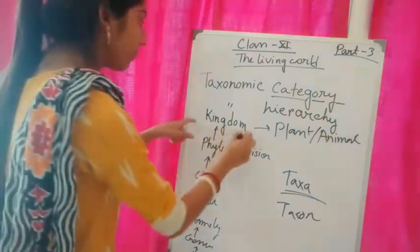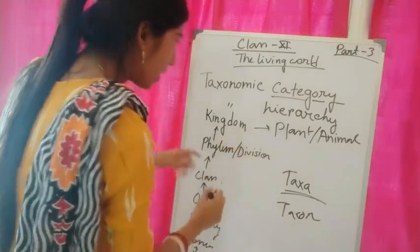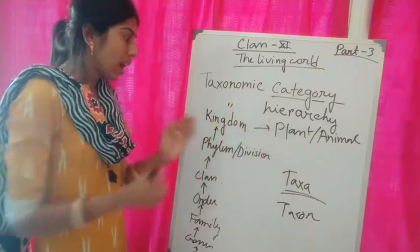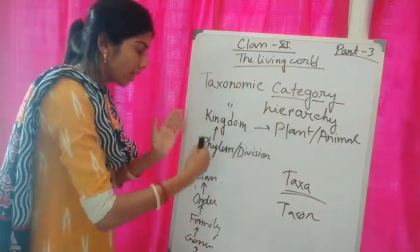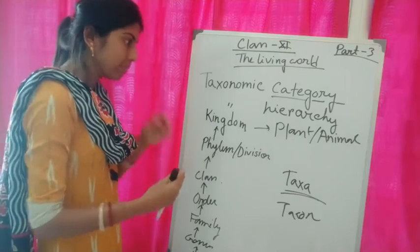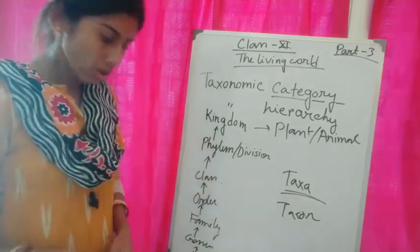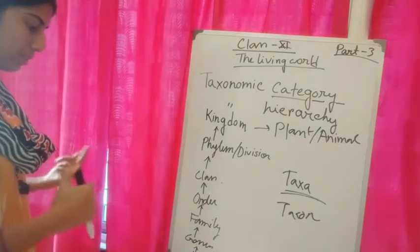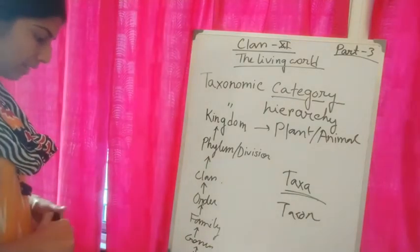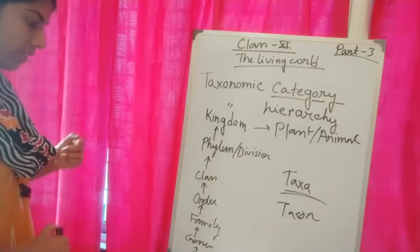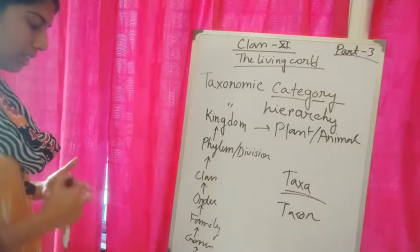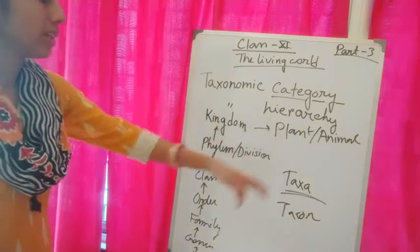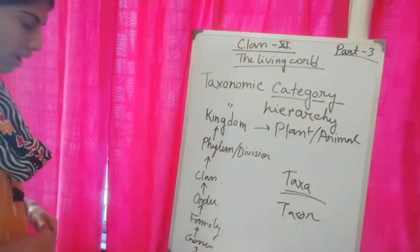Each category is referred to as a unit of classification; it represents a rank and is commonly called a taxon (plural: taxa). So kingdom, phylum, class, and order are categories, while the specific groups under each rank — such as Animalia under kingdom — are the taxon.